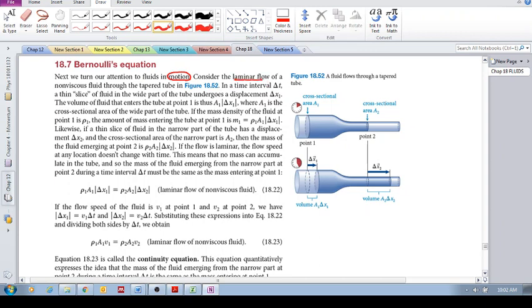But what are the characteristics of this flow? Number one, it's laminar. Make sure that you recall and understand what's laminar flow. These are the assumptions we're making. And the fluid is non-viscous. So laminar flow and non-viscous flowing through a tapered tube.